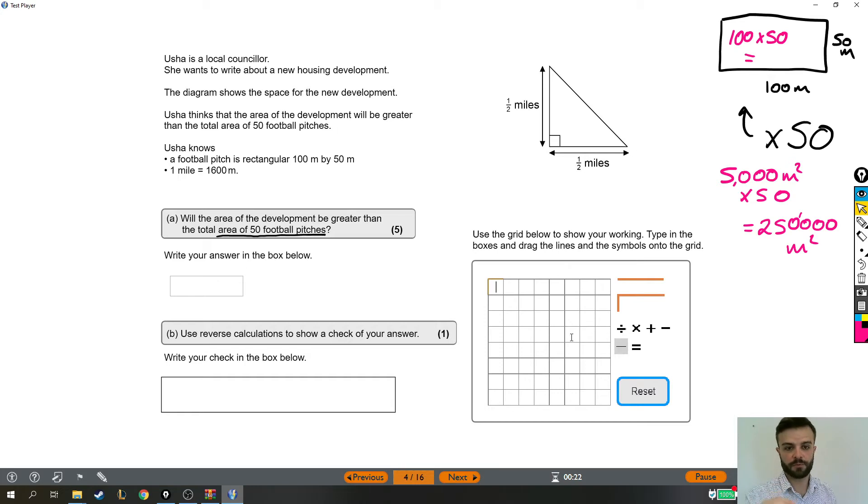Things we have done: we have done 100 times 50 which equaled 5,000, we then did 5,000 times 50 which equaled 250,000—that's 50 football pitches. Next, let's try and find the area of the housing development.